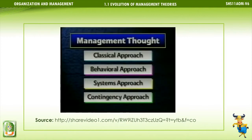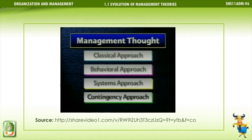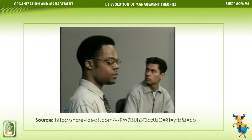The search for solutions provided the basis for the development of the four major theories or approaches to management: the classical approach, beginning in the late 1800s; the behavioral approach, in the early 1900s; the systems approach, in the 1930s and 40s; and the contingency approach, a theory that gained prominence in the 1960s.